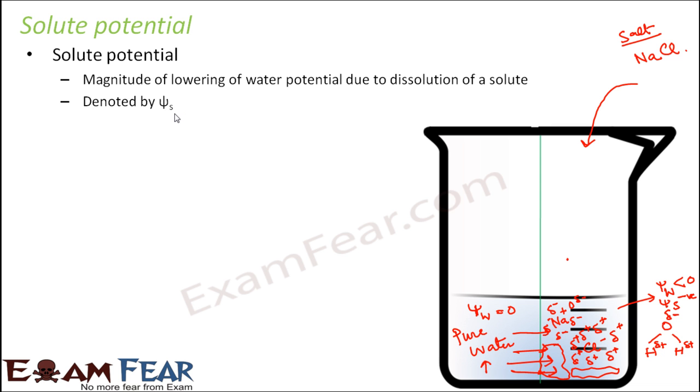Solute potential is denoted by psi with the subscript S. It is always negative because the water potential of pure water is considered as zero. So solute potential decreases it further. So obviously it becomes negative.